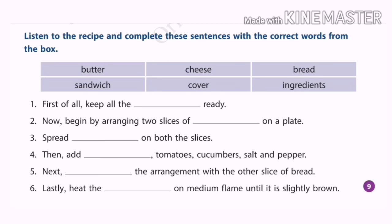Next, put the slices of tomato and cucumber on top. Sprinkle some salt and pepper. Cover this arrangement with the other slice of bread. Lastly, heat the sandwich on a medium flame until the bread is slightly brown on both sides. Your sandwich is ready.